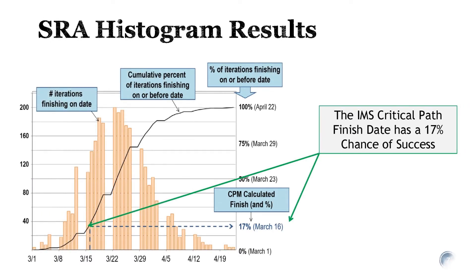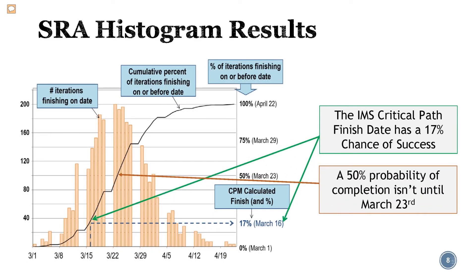The results of the SRA are often depicted using graphics generated by the SRA software. This is a sample histogram, which plots the number of predicted completion forecasts hitting each given date in the date range. In the output shown here, the SRA results report the project is predicted to finish anywhere between March 1st and the week of April 22nd. The modeling reached 100% on April 22nd, which means there is a 100% chance for the project to be finished by that date. We can compare this to the project finish date currently calculated by the deterministic critical path method schedule, which is March 18th. According to the output of the modeling, there is a 17% chance of the project being finished on or before that date. Statistically, the project doesn't even reach a 50% probability of completion until March 23rd, which is a full week past the current finish date.